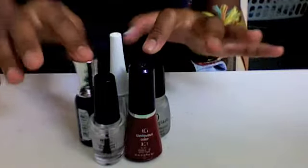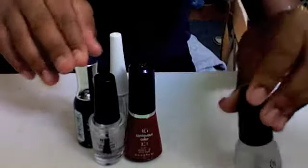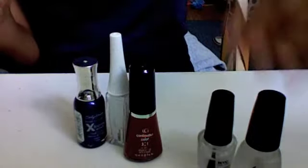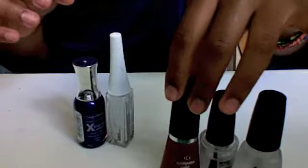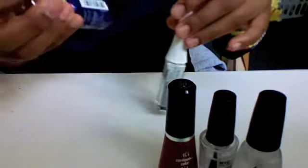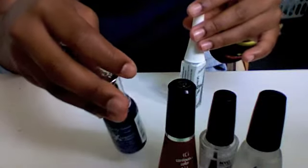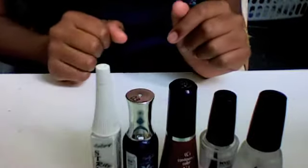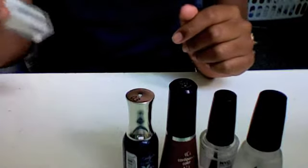So for this video, what we're going to use is China Glaze base coat, as always, and NYC top coat. Cover Girl in classic red. Sally Hansen in indigo. And a white detail pen from Stripe Bright.